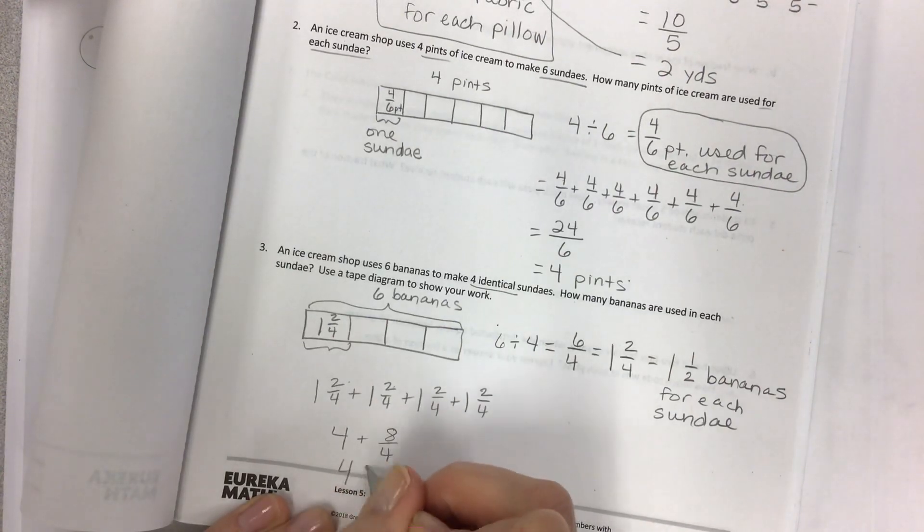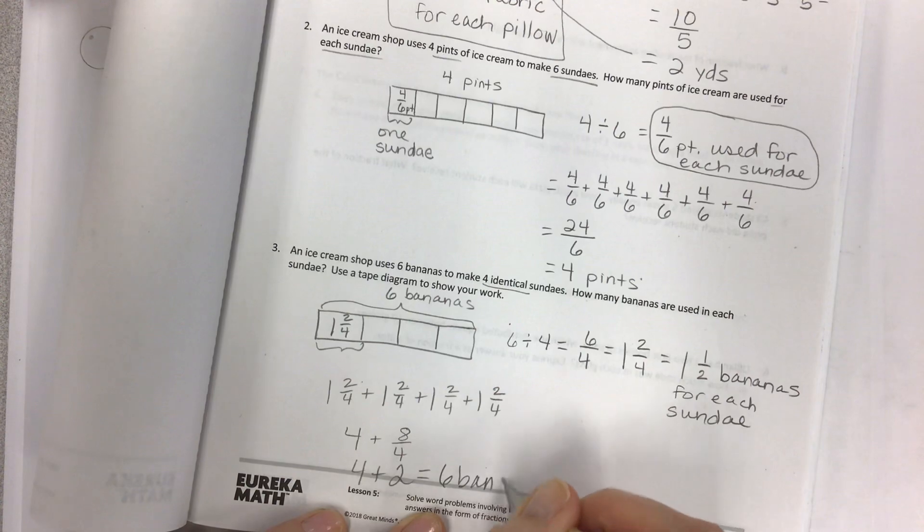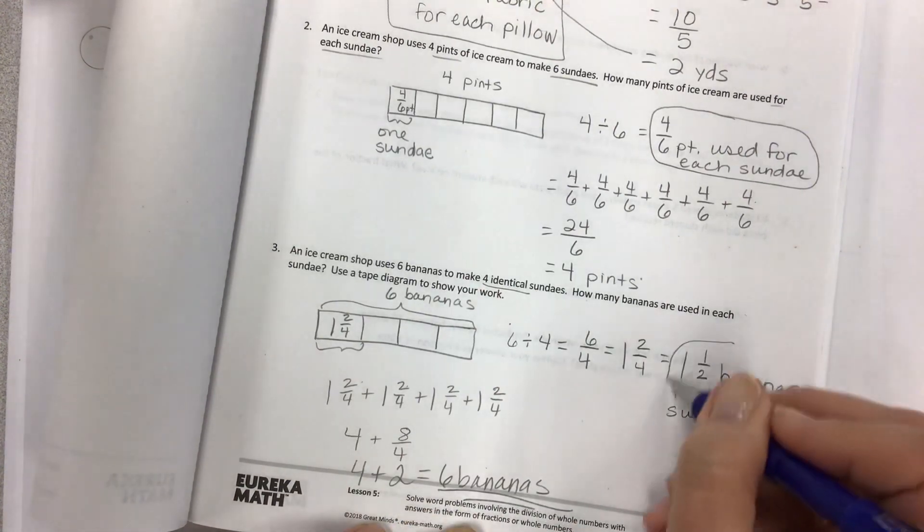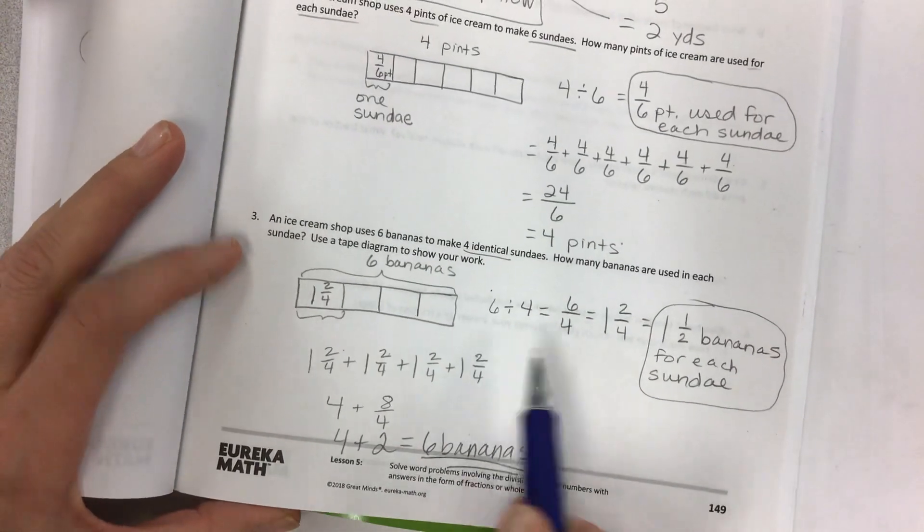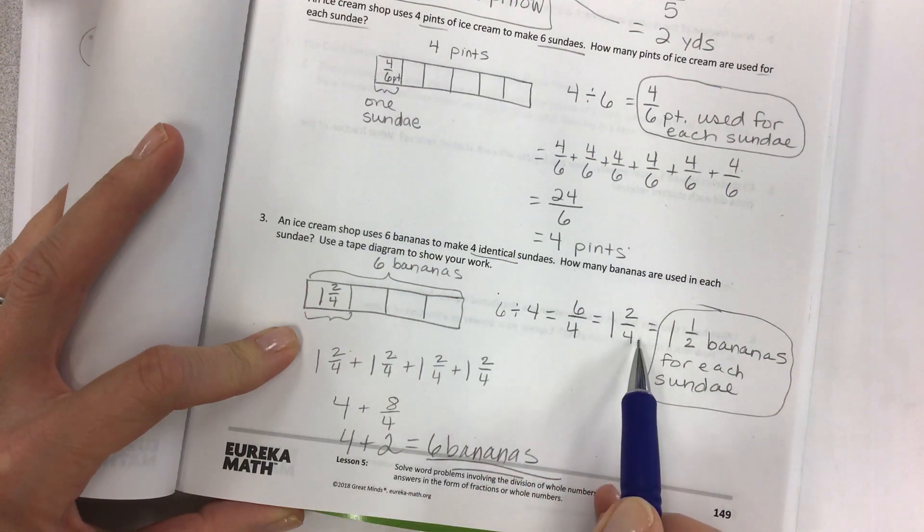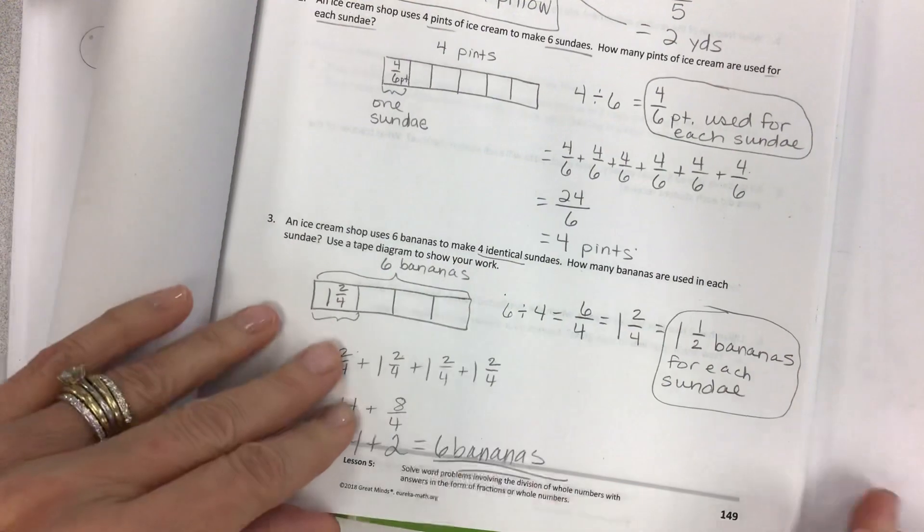This equals two, which gives us our six bananas. And since that matches, this is our final answer. So you prove it going in. You take it apart and then put it back together. Take it apart, put it back together. So you proved it.